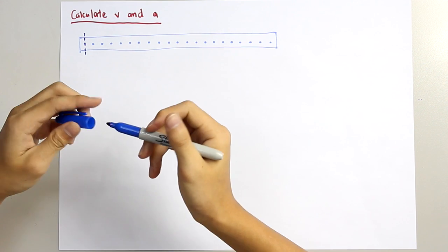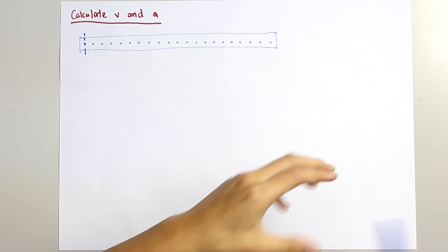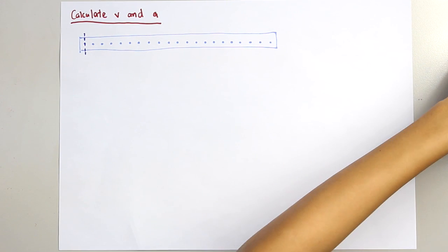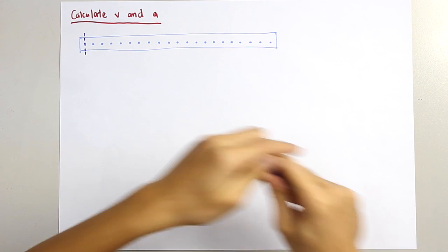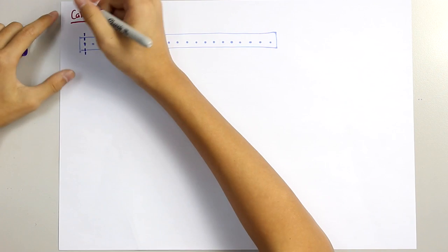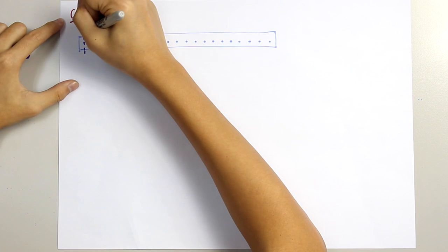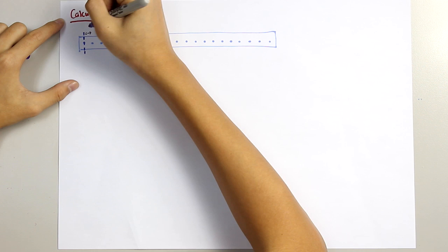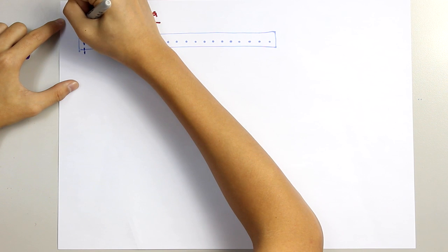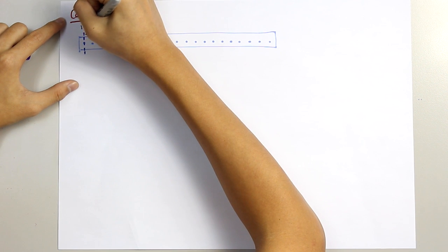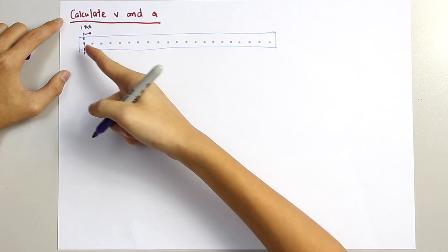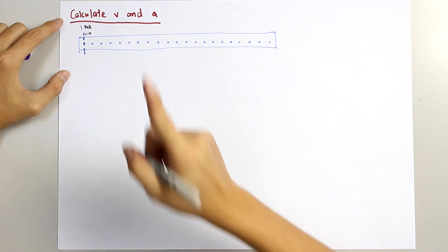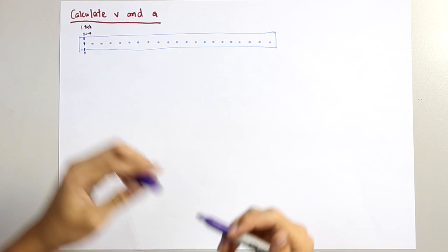Remember, 1 tick is the time interval between two consecutive dots — each dot is not 1 tick.